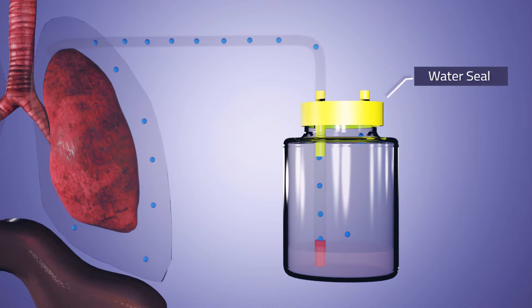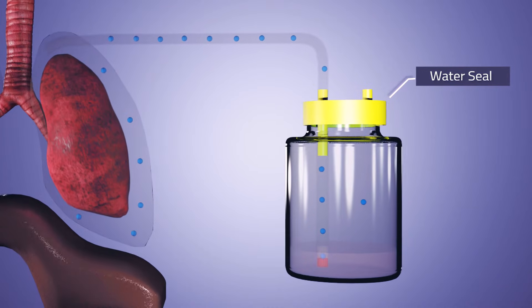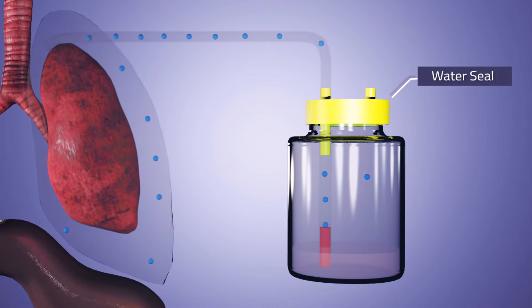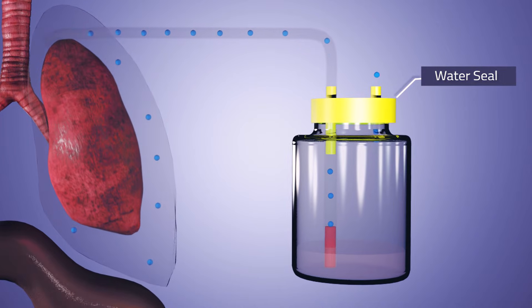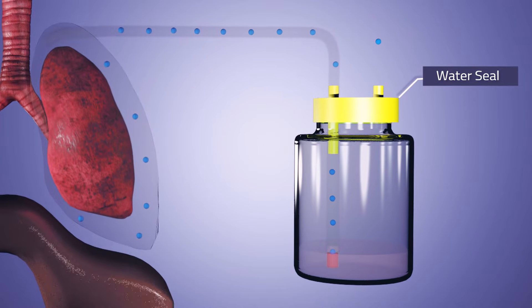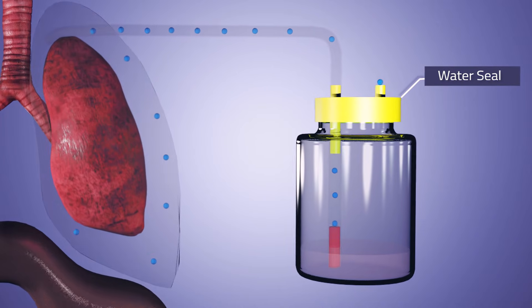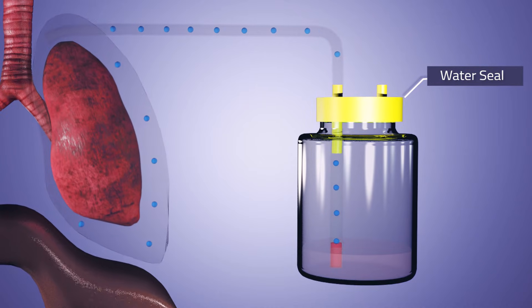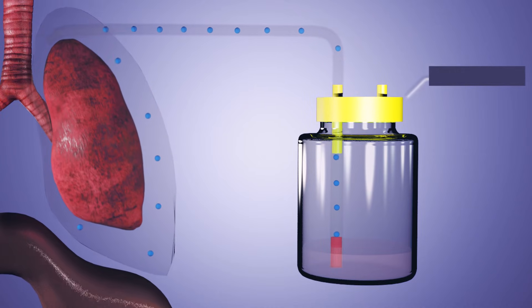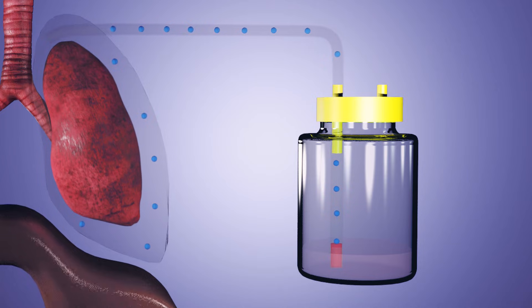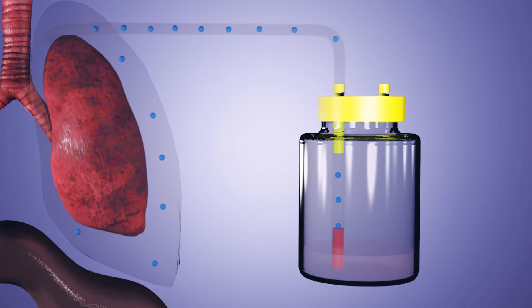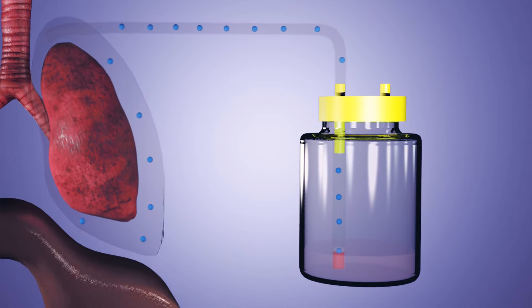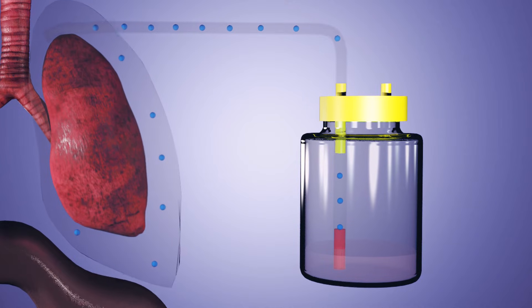With each exhalation, the diaphragm rises and expels the air through the drain. On inhalation, the diaphragm descends and pulls the lung, expanding it. Ideally, the cycle would continue until all the air in the pleural space exits, re-establishing the negative pressure and the total expansion of the lung. At the end of the drainage, the pressure generated by the compression of the air remaining in the pleural space and in the drain is not enough to allow passage through the water seal.